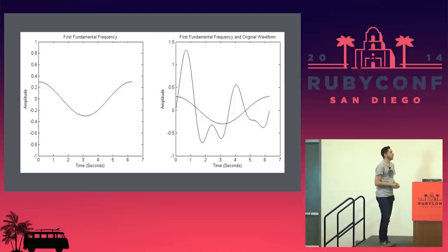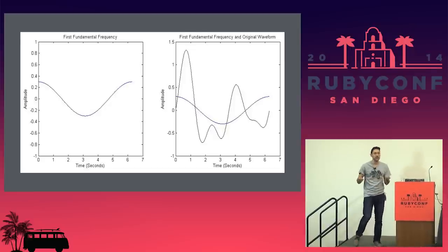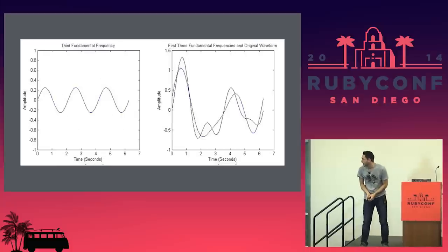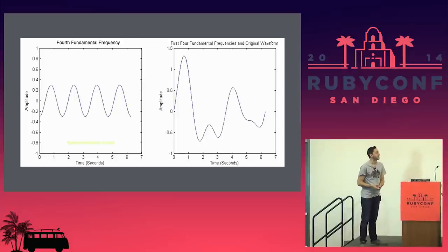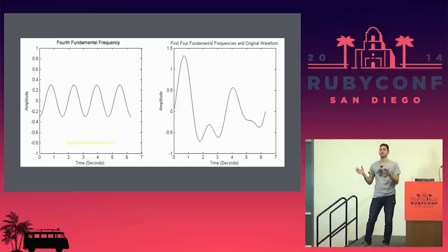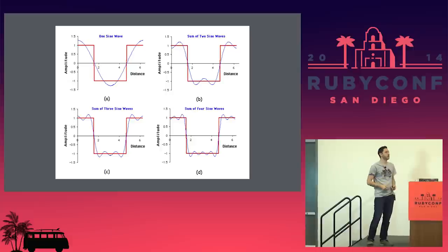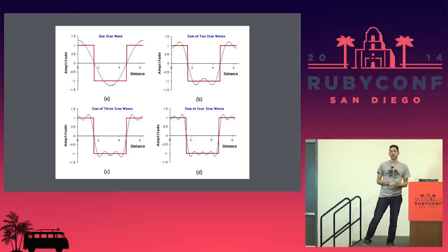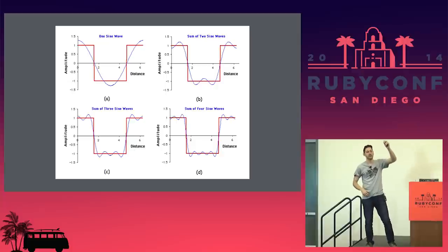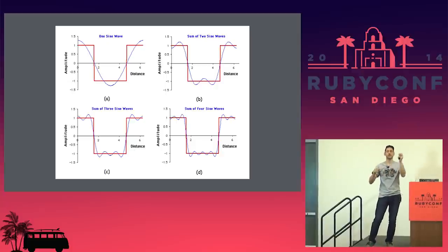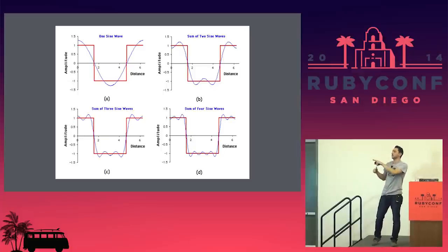Here's a waveform we're going to try to approximate by adding sine waves together. We add one sine wave — it doesn't look like it. We add another — it's starting to get closer. We add another — getting closer. Then we add the fourth sine wave and it's exactly like the target wave. That wave was actually created using the exact summation of those four waves. Ableton Live creates square waves using the addition of sine waves, which is why you see a little noise at the top and bottom.